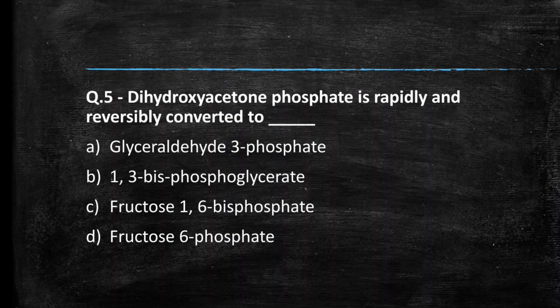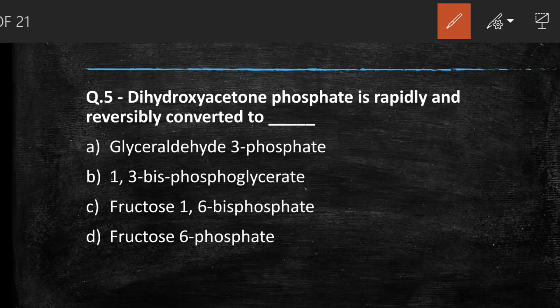Next question: dihydroxyacetone phosphate is rapidly and reversibly converted to — (A) glyceraldehyde-3-phosphate, (B) 1,3-bisphosphoglycerate, (C) fructose-1,6-bisphosphate, (D) fructose-6-phosphate. The right answer is option A, glyceraldehyde-3-phosphate.